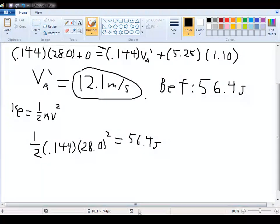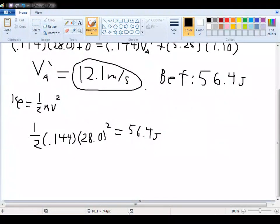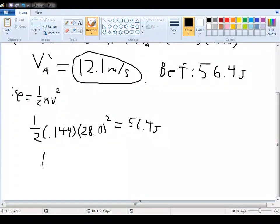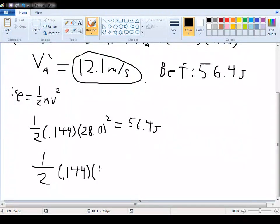Now to find the velocity afterwards, we're just simply going to find the sum of these variable values right here. So in this case, it's going to be one-half of 1.44. The mass obviously hasn't changed. Times our velocity for A, which has become 12.1, squaring that.